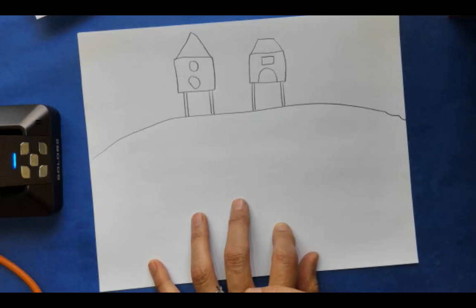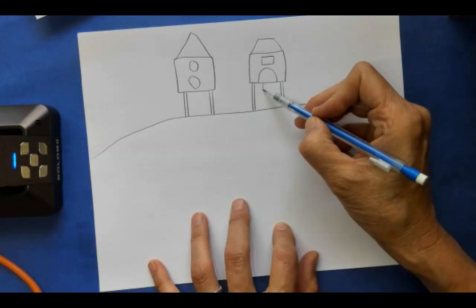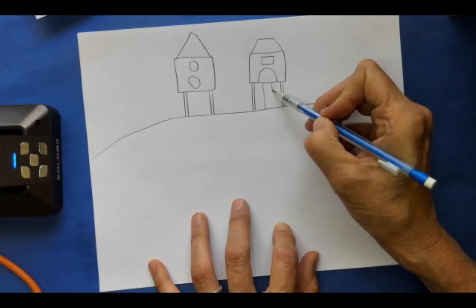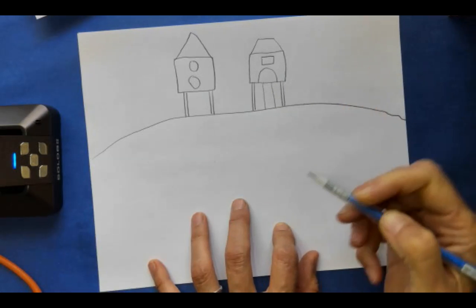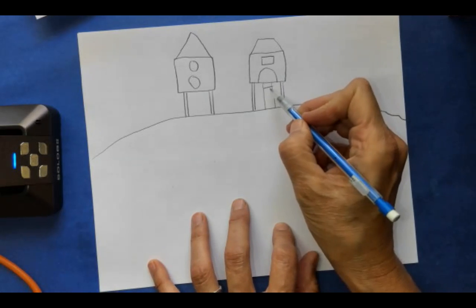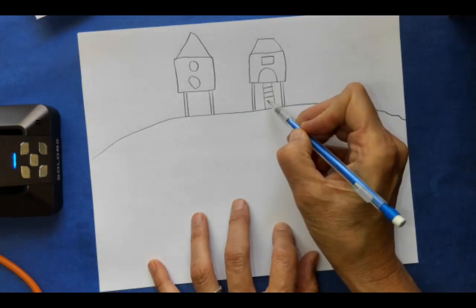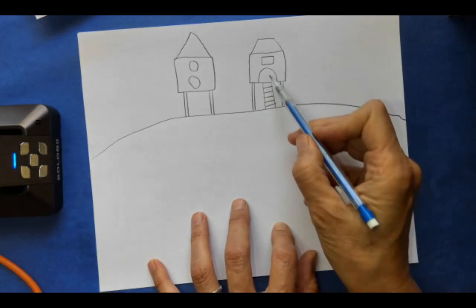You know, we need a way to get in. Let's put a ladder. So let's come to this doorway and put one line and another line. And we're going to make some lines going across. We have a ladder. Look, we can get into our play structure.